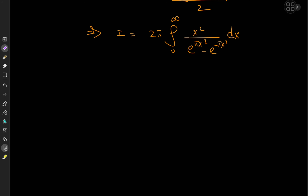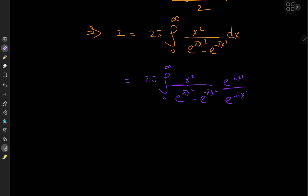Long-time viewers of the show know that I love invoking a geometric series whenever I get the chance, so we'll do exactly that. We have 2π times the integral from 0 to infinity of x² / (e^(πx²) − e^(−πx²)) dx, and I'll factor out e^(−πx²) from the denominator so that we have a convergent geometric series, giving us 2π times the integral from 0 to infinity of x² · e^(−πx²) · 1/(1 − e^(−2πx²)) dx.